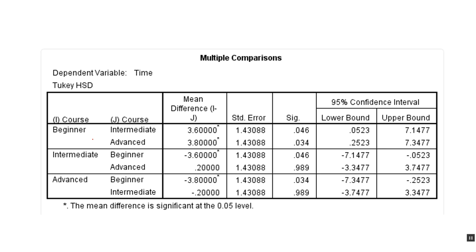For example, with three levels — beginner, intermediate, and advanced — the Tukey output would tell you: the difference between beginner and intermediate is significant at p = .05; the difference between beginner and advanced is also significant at p = .05; but the difference between intermediate and advanced is not significant at the .05 level. Those are the three comparisons, and using the Tukey gives you a very conservative test of whether there's a significant difference between those three levels.